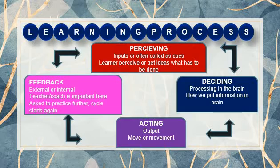The second stage is deciding, which is the processing in the brain — how a learner stores information. Deciding involves taking consideration of a matter, identifying desired results, determining the options to reach the end result, and then selecting the most suitable option to achieve the desired goal.